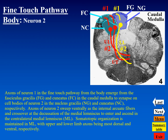Here in the caudal medulla, the axons of neuron one in the fine touch pathway terminate upon cell bodies of neuron two in their respective nuclei — the nucleus gracilis and nucleus cuneatus. These cell bodies are organized somatotopically, with lower limb cell bodies more medial and upper limb more lateral. Axons of neuron two project ventrally as the internal arcuate fibers and decussate at the decussation of the medial lemniscus, then continue to ascend through the brainstem in the contralateral medial lemniscus.